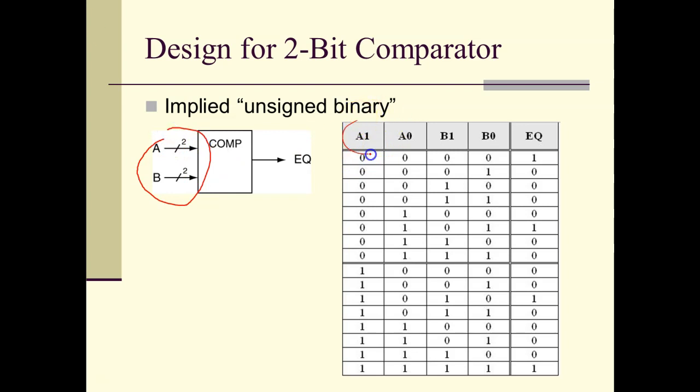There are four inputs here. These are all the possible inputs, and these are the outputs. You can see that I'm asserting EQ when both A and B are equal. You can see that in these four cases here.